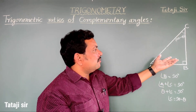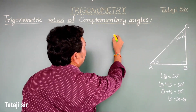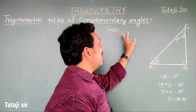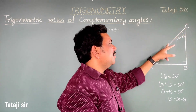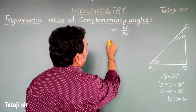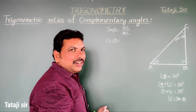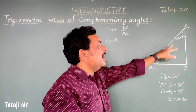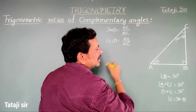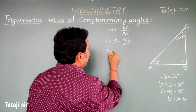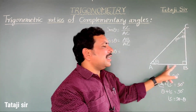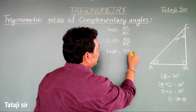Let's define trigonometric ratios from this right triangle. For angle theta: sine theta equals opposite side by hypotenuse, that is BC by AC. Cos theta equals adjacent side by hypotenuse, that is AB by AC. Tan theta equals opposite side by adjacent side, that is BC by AB.